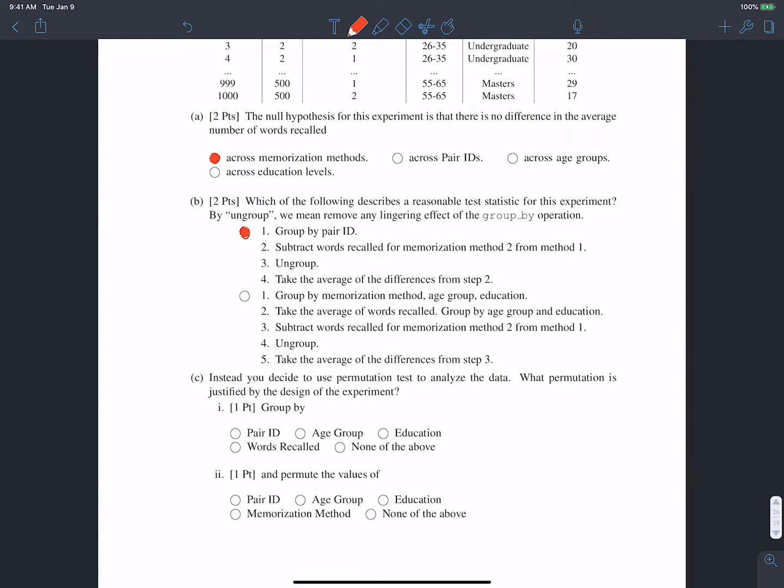And C, instead, you decide to use the permutation test to analyze your data, what permutation is justified by the design of the experiment. So first of all, the question is, what should we group by? So within what category should we shuffle things? And again, that's within pair ID. OK, and essentially what we're going to do is within pair ID, instead of assigning person A to method one and person B to method two, we will shuffle that. So maybe we'll assign person A to method two and person B to method one. So what we're going to shuffle or permute are the values of the memorization method.